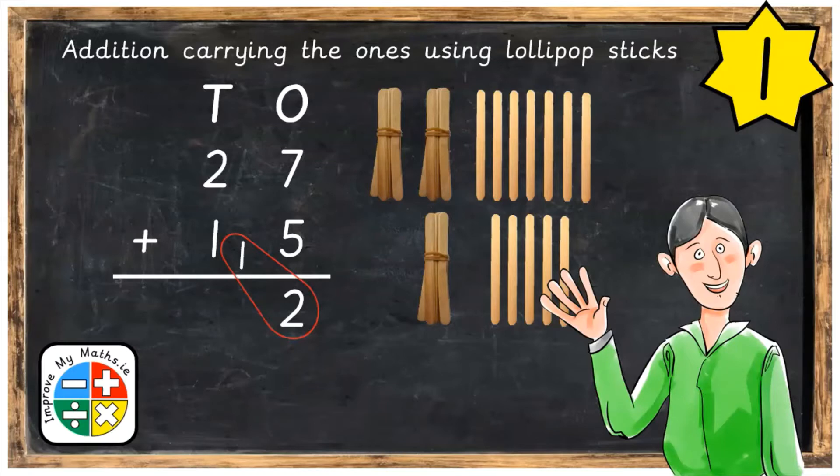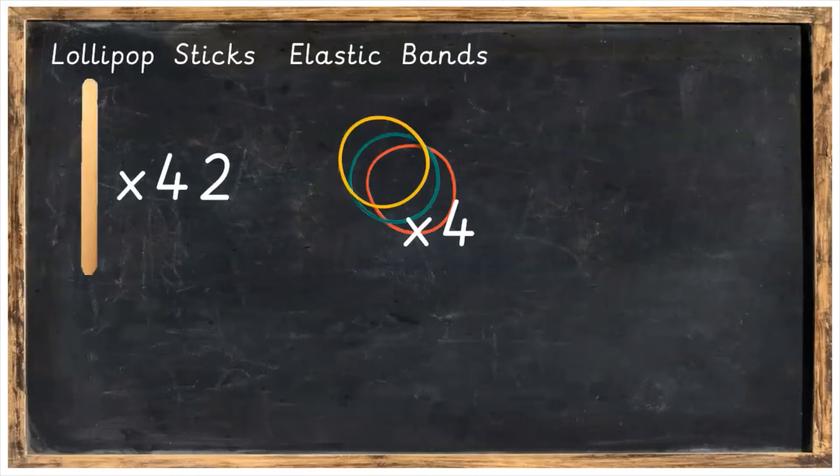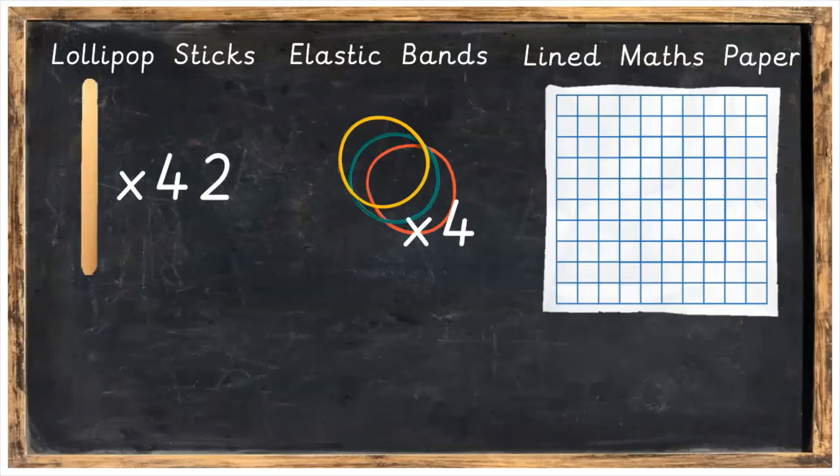It's the first lesson on this topic and is part of the operations and addition area of maths. Before we get started we're going to need a few things. We're going to need some lollipop sticks, some elastic bands, some lined math paper and a pencil and eraser.